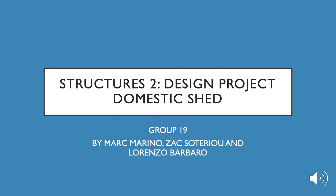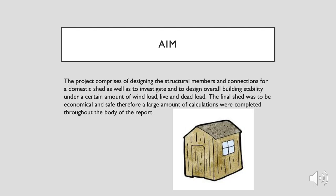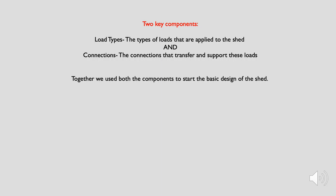Welcome to Structures 2: Design of Domestic Shed by Mark Marino, Zach Sotirio, and Lorenzo Barbro. This design project for Structures 2 was one of the most interesting projects we've done throughout the program. The project comprises designing the structural members and connections for a domestic shed, as well as investigating and designing overall building stability under wind load, live load, and dead load. The final shed was to be economical and safe, therefore a large amount of calculations were completed throughout the report.